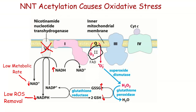Furthermore, when NNT becomes acetylated, that causes oxidative stress. Why? Because NNT, as it's replenishing our NAD+, provides NADPH. Those electrons flow through reduced glutathione and reduce hydrogen peroxide back to water. So the less NADPH you have, the less ability you have to reduce hydrogen peroxide back to water.